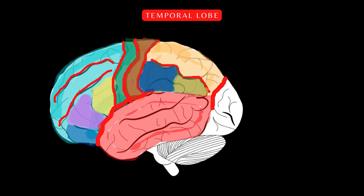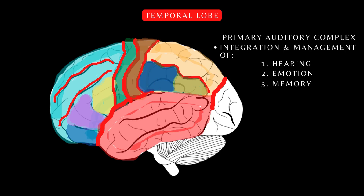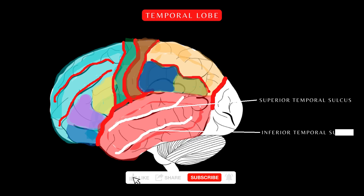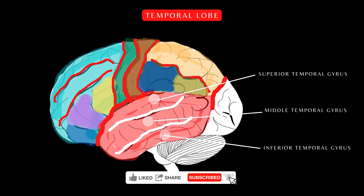Here's the temporal lobe. It contains the primary auditory complex and is responsible for processing auditory stimuli, emotion, language, and memory. On the lateral view, two sulci can be seen — the superior and inferior temporal sulci — which divide the temporal lobe into the superior, middle, and inferior temporal gyrus.